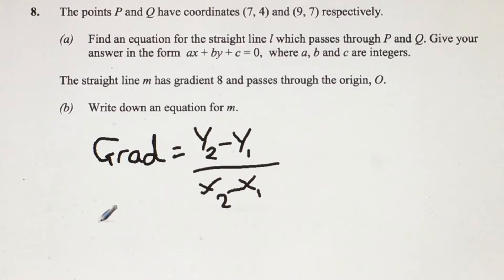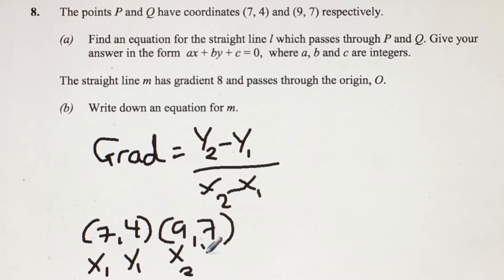At this point I'm going to write down the coordinates and label them. So we have (7,4) and (9,7). 7 is x1, 4 is y1, 9 is x2, and 7 is y2.